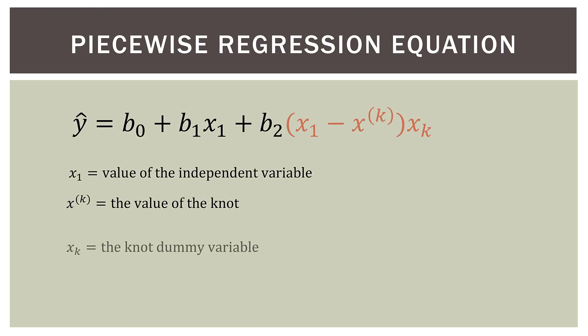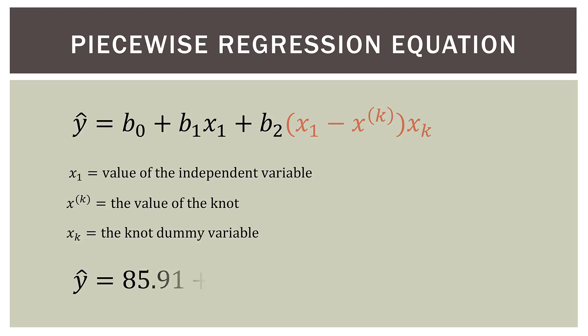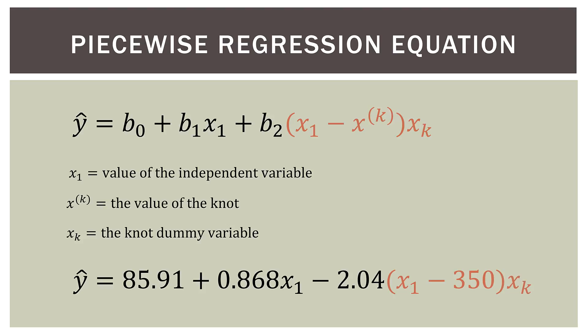Here is our piecewise regression equation from before. All we're going to do is substitute the output values into the equation. The intercept was 85.91, the coefficient b-one was 0.868, and the coefficient b-two (for knot dummy times the independent variable) is negative 2.04. We substitute 350 for the knot value x-to-the-k. The two remaining unknowns are x-sub-one, the value of the independent variable we choose, and x-sub-k, the knot dummy variable determined by which side of the knot a point falls on.